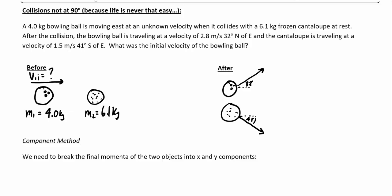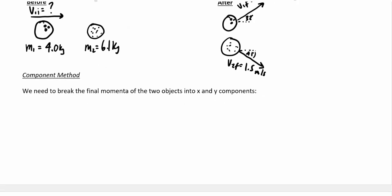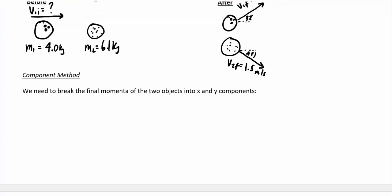What we're looking for is the initial velocity of the bowling ball — how fast was it moving before the collision? We're given the final velocities: V1 final is 2.8 meters per second and V2 final is 1.5 meters per second. There are two ways to solve this; the first is the component method.